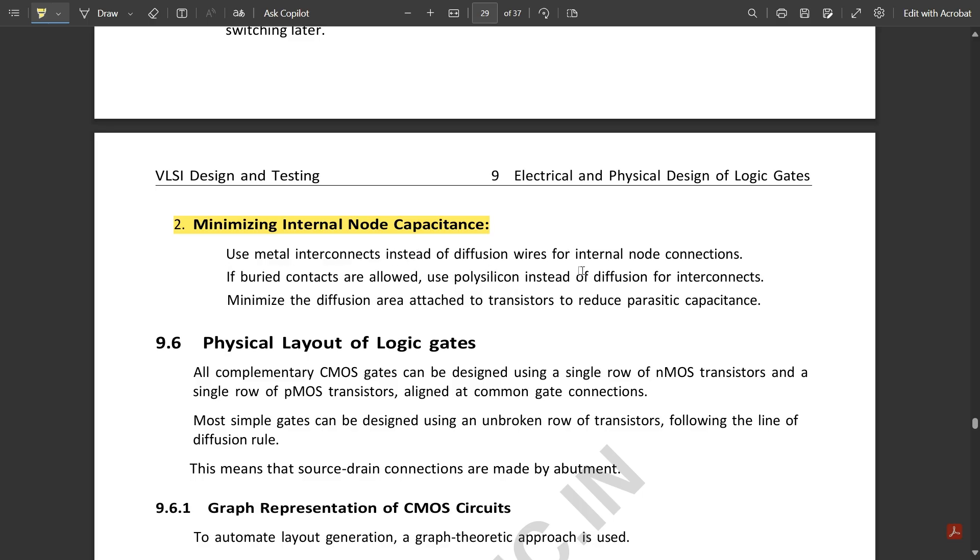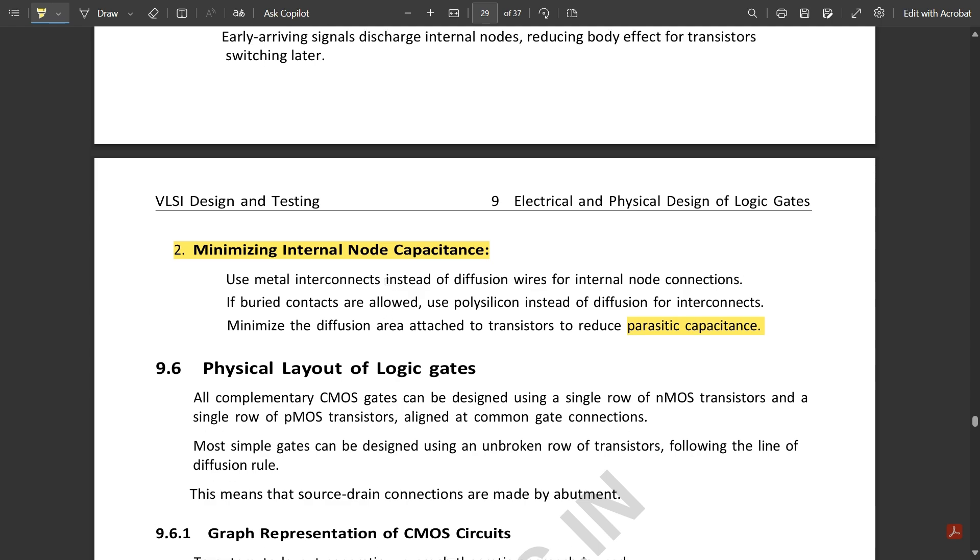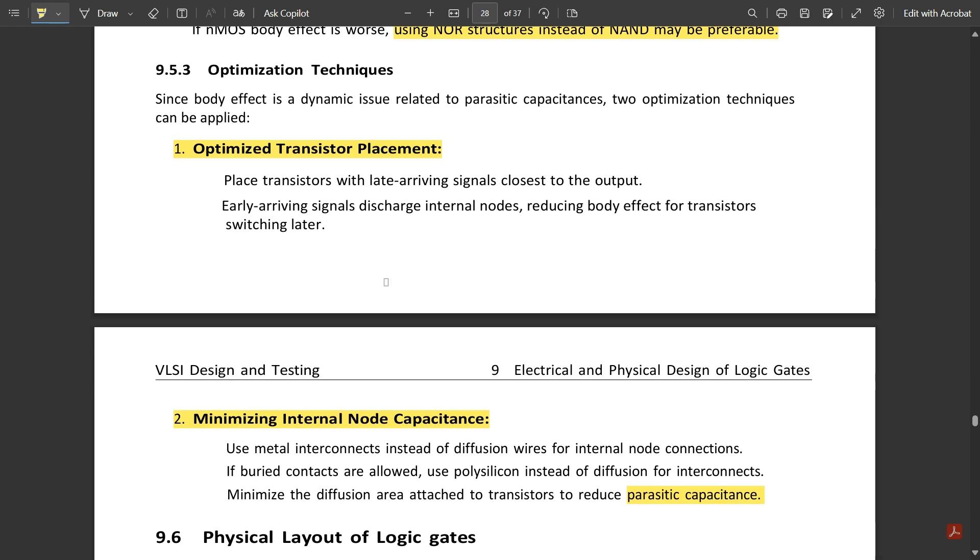Next is minimizing the internal node capacitance. Use metal interconnects instead of diffusion wires for internal node connections. If buried contacts are allowed, use polysilicon instead of diffusion for interconnects. Minimize the diffusion area attached to transistors to reduce parasitic capacitance.